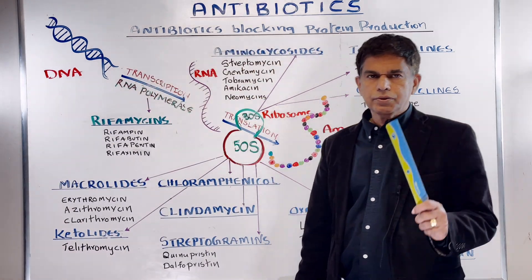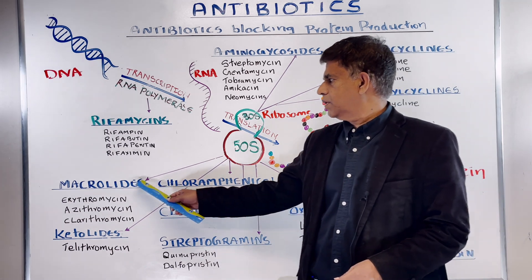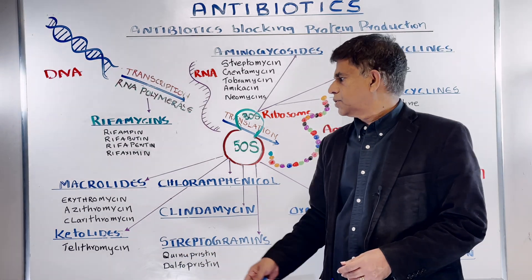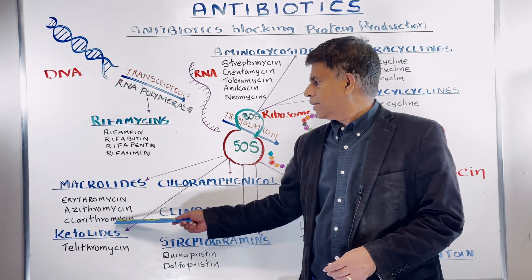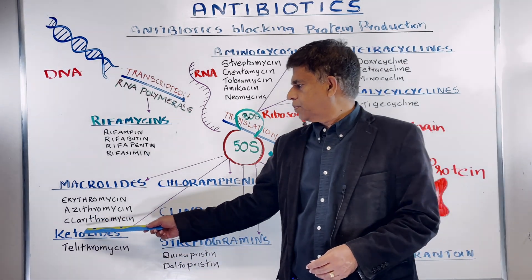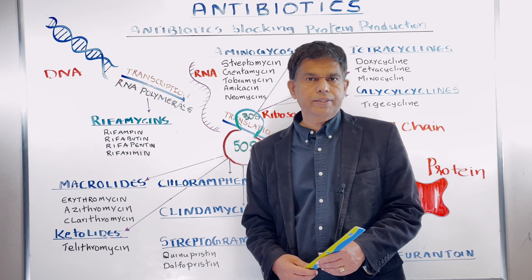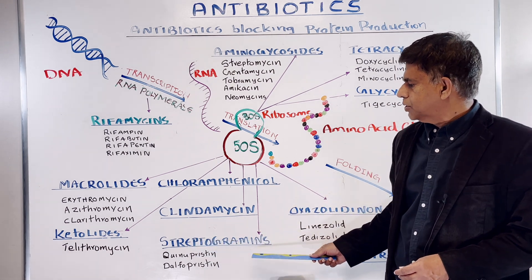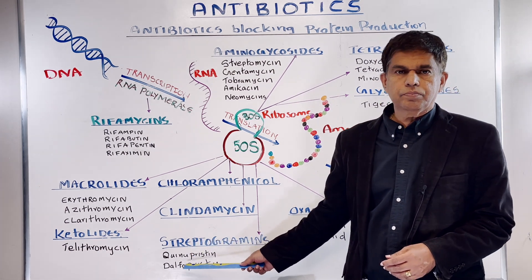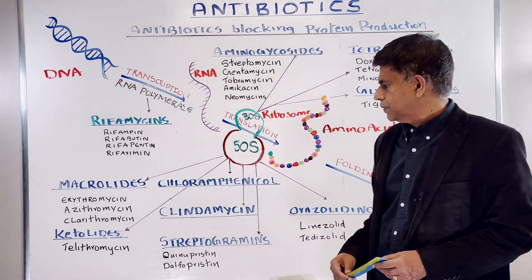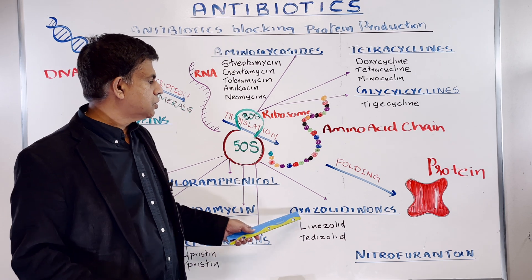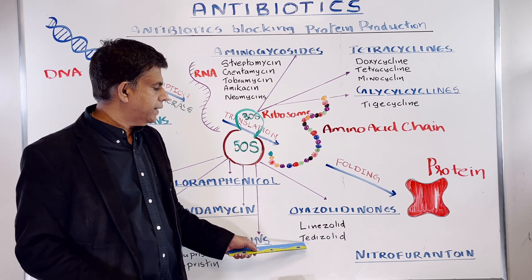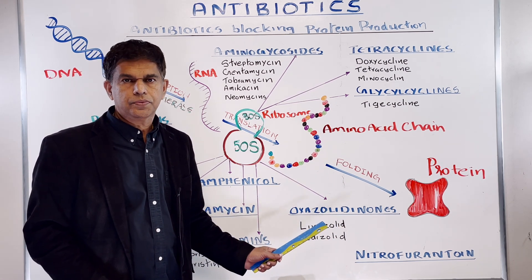Now let's look at the 50S subunit antibiotics. First, the macrolides — one of the most common drugs we prescribe is azithromycin. The group includes erythromycin, azithromycin, and clarithromycin. Then we have ketolides; the key drug there is telithromycin. Next are chloramphenicol and clindamycin. Then streptogramins — quinupristin and dalfopristin. Finally, the oxazolidinones — linezolid and tedizolid — two newer drugs.